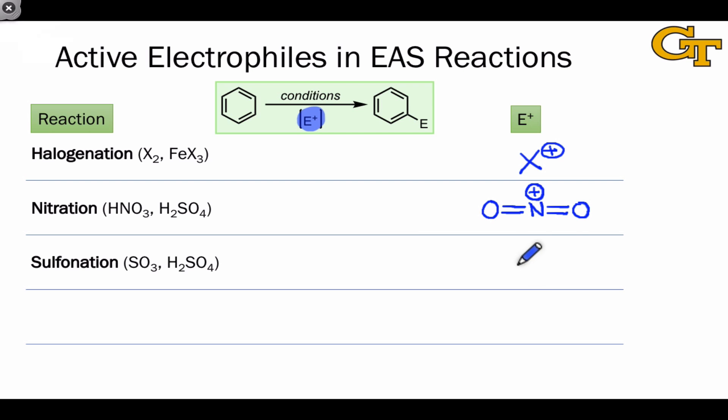Sulfonation installs the sulfonyl group, and the active electrophile here is a species with two double bonds to the sulfur atom plus an additional OH group and a formal positive charge at sulfur.